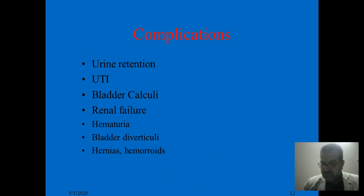Complications of long-standing BPH include: acute urinary retention, which is painful, and chronic urinary retention, which is usually painless. In acute retention, drainage is typically maximum 600–700 ml. In chronic retention, patients can drain more than one liter of urine without feeling any pain.